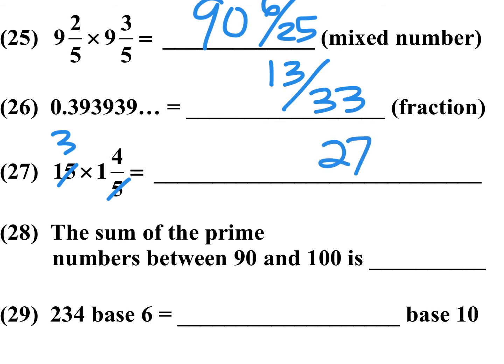Number 28, the sum of the prime numbers between 90 and 100. Well, there's only one prime number in the 90s, and that's 97. So the sum of those would just be 97. 91 is not a prime number because that's 7 times 13. 93 is 31 times 3. 95 is 19 times 5. And of course, 99 is 33 times 3. And the even numbers are not prime. So 97 is the only prime number. And so it's very handy to know that.